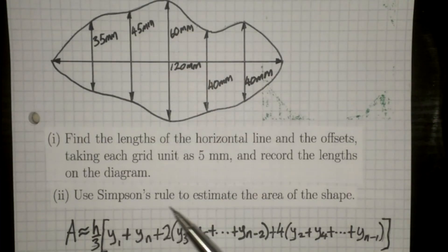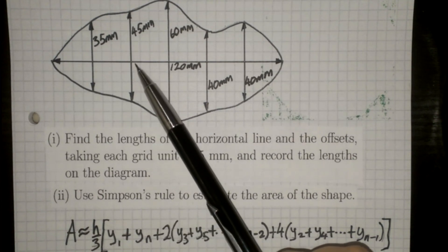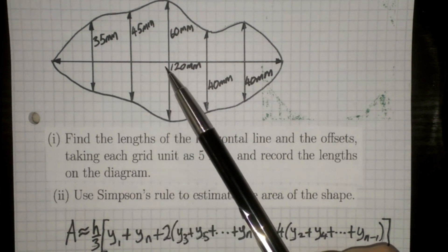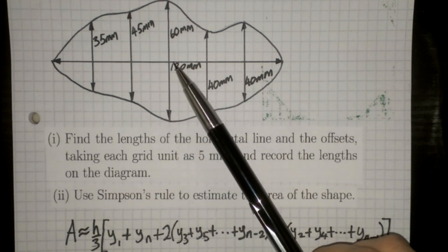In part two, you have to use Simpson's rule to estimate the area of the shape. Simpson's rule is on page 12 of the formula and tables book in the area approximations section. Be careful — don't use the trapezoidal rule; there are two rules on that page. Simpson's rule says you take h/3, where h is the horizontal distance between adjacent offsets, the vertical lines. That's 20mm here.